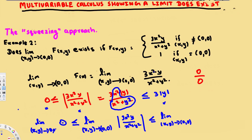You can already detect that we are going to have a limit existing situation, because the numerator has three powers total (x² times y = degree 3) while the denominator has only two powers. To illustrate — not a formula — think of zero³ over zero²: two zeros cancel and we are left with zero. So we can already see the limit is going to exist.